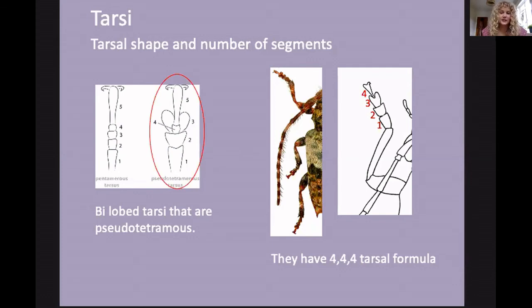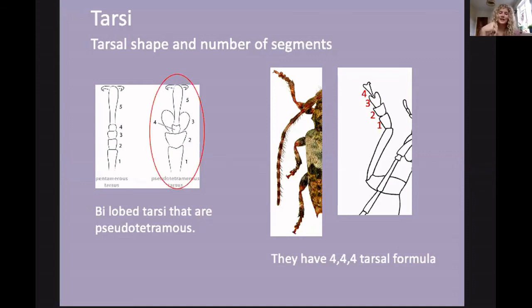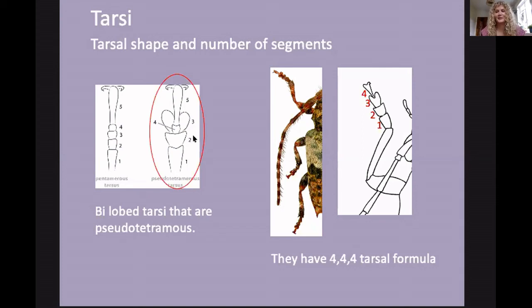There's a word of warning: Longhorns appear to have four tarsal segments per leg, but they actually have five — there's a hidden tarsal segment tucked behind one of the others. We call this pseudotetramerous. So just bear that in mind.